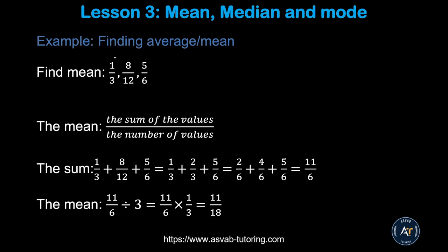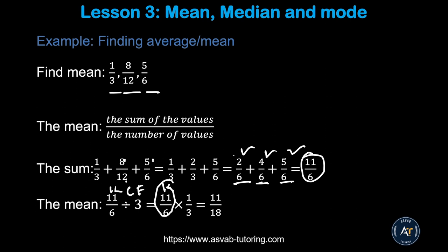This is another example using fractions. Same way: add the fractions together and then find the Average or Mean. Add the sum of the variables then divide by the number of variables. Add 1/3 plus 8/12 plus 5/6. You find the common denominator — which is 6 — then find the equivalent fractions. Adding them up gives you 11/6. There are 3 fractions, so divide by 3. Remember how to divide a fraction: keep, change, flip — keep the first fraction, change division to multiplication, then flip the second. Multiply top to top, bottom to bottom. That gives you 11/18.